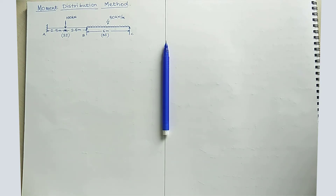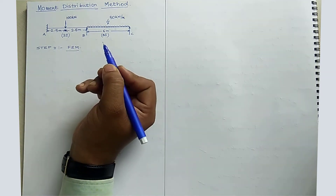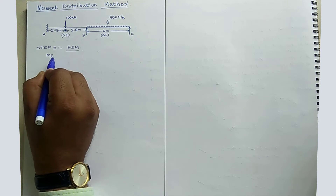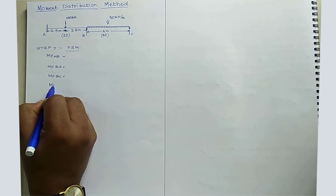Now in the analysis, the first step is to calculate the fixed-end moment. We write it as MF (fixed-end moment). We need to calculate the fixed-end moment for AB, fixed-end moment BA, fixed-end moment BC, and fixed-end moment CB.